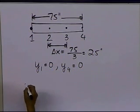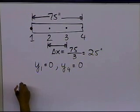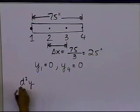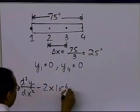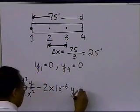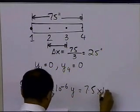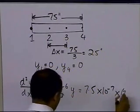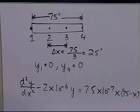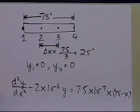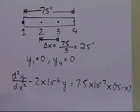I'm going to first substitute the values of the constants, and I'll get d²y/dx² minus 2 times 10 to the power minus 6 times y, equals 7.5 times 10 to the power minus 7 times x times (75 minus x). I get this equation by substituting the values of tension T, the uniformly distributed load Q, the length L, E, and I.